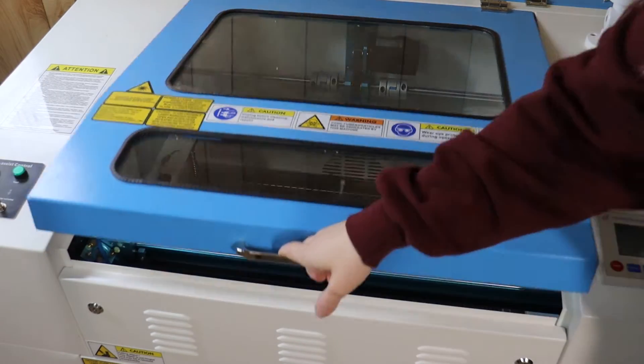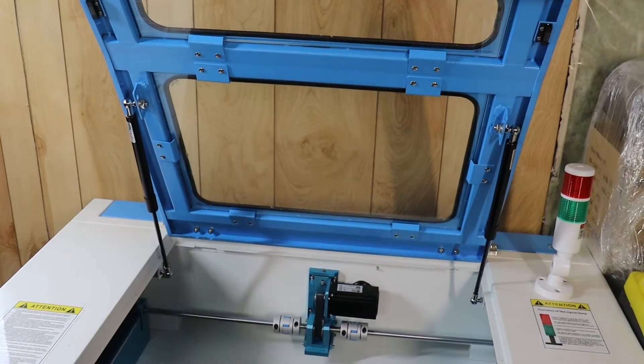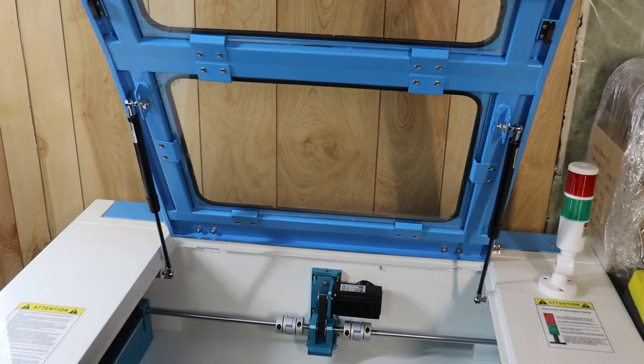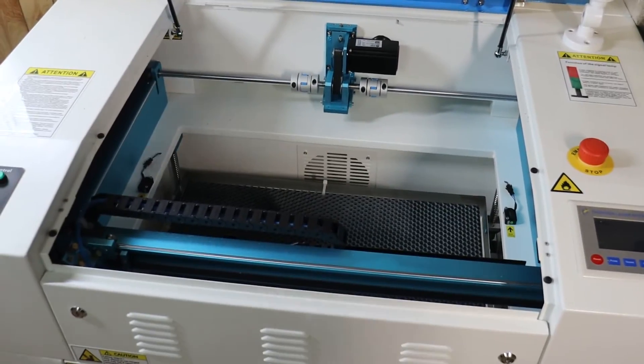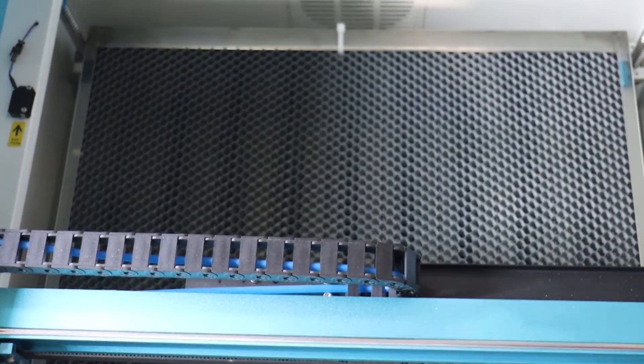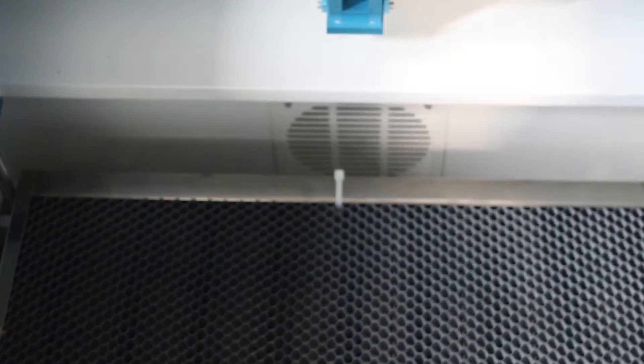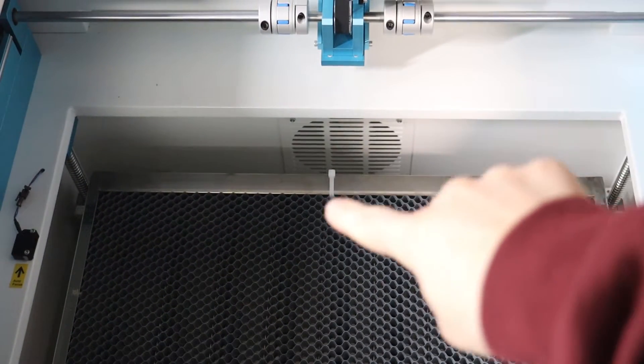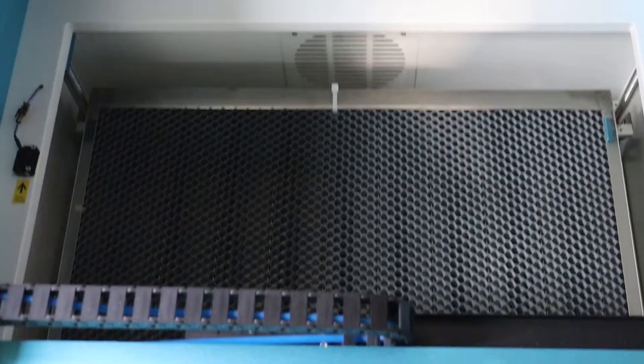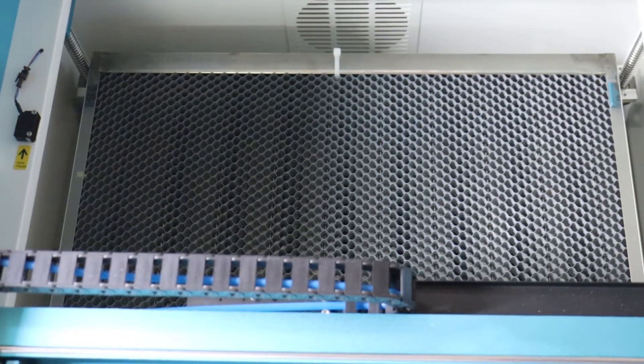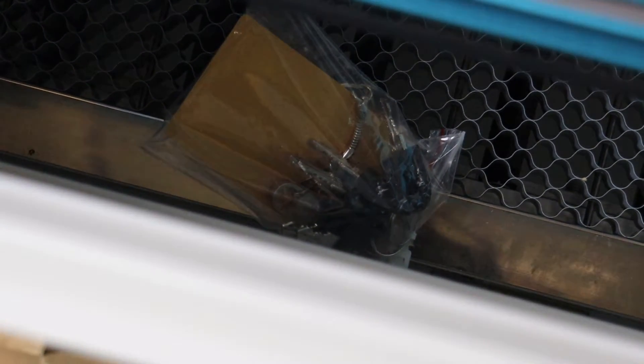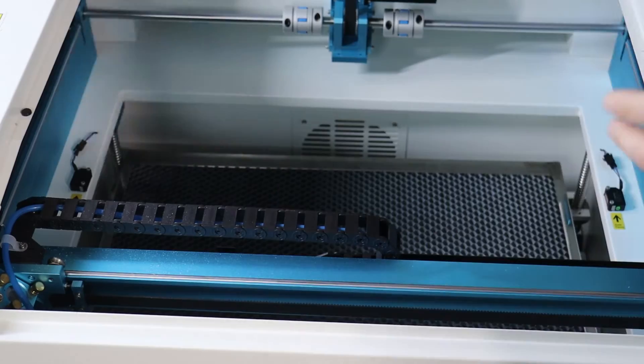Alright, so to begin we're going to open up the top of the laser here. The door is spring loaded so it pops up and it actually stays open, so that's nice. Inside we are actually going to have to remove a few things. Down in here there is a zip tie holding on the honeycomb grill, keeping it in place. And then under here we have some keys that are actually zip tied there. We're going to cut the zip ties and take those off.